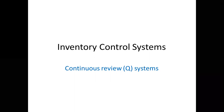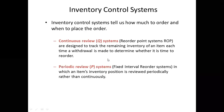The inventory control system tells us how much to order and when to place the order. We need to know how much to order for raw materials. There are two types: the continuous review system and the periodic review system. In the continuous review system, the company will regularly monitor the materials, and when materials are required, we need to order and pre-order.